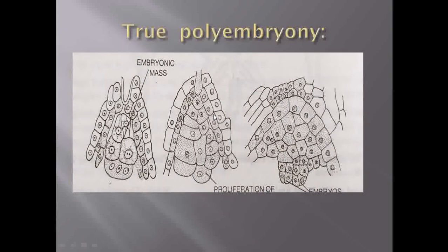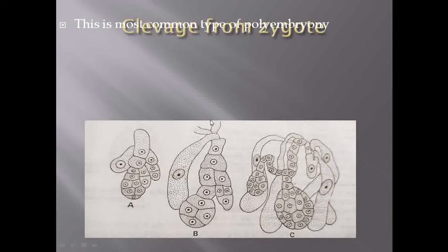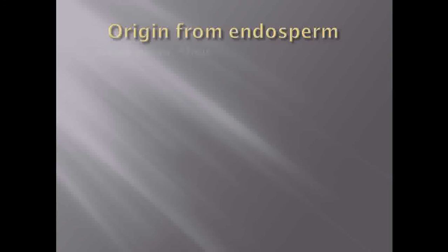Now moving towards the second type of true polyembryony: adventive polyembryony. Adventive polyembryony means whenever there is development of embryo from cells outside the embryo sac — either from nucellar cells or from integumental cells — that type of polyembryony is categorized as adventive polyembryony.